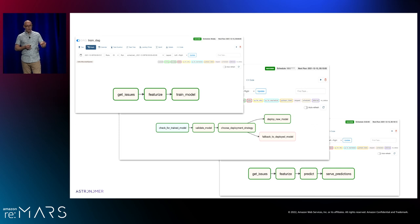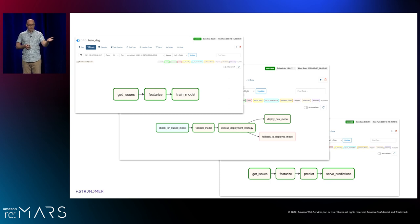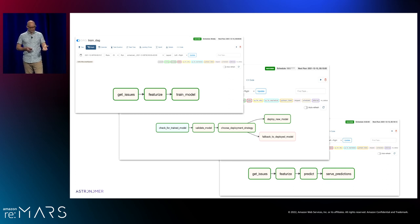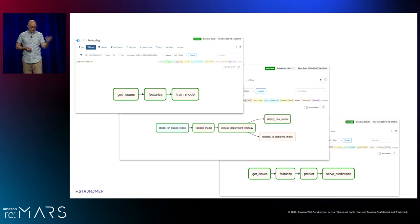We construct these data pipelines — DAGs. We have three: the first does model training, calling the GitHub API to get issues, adding features, computing TF-IDF scores, training a model, and storing it in S3. We run that weekly. The middle flow takes that model, validates it, runs metrics to check for model drift, and either falls back to the existing model or deploys the new one. Finally, on a daily basis, we pull the model from S3, run predictions, and serve those up in a UI.